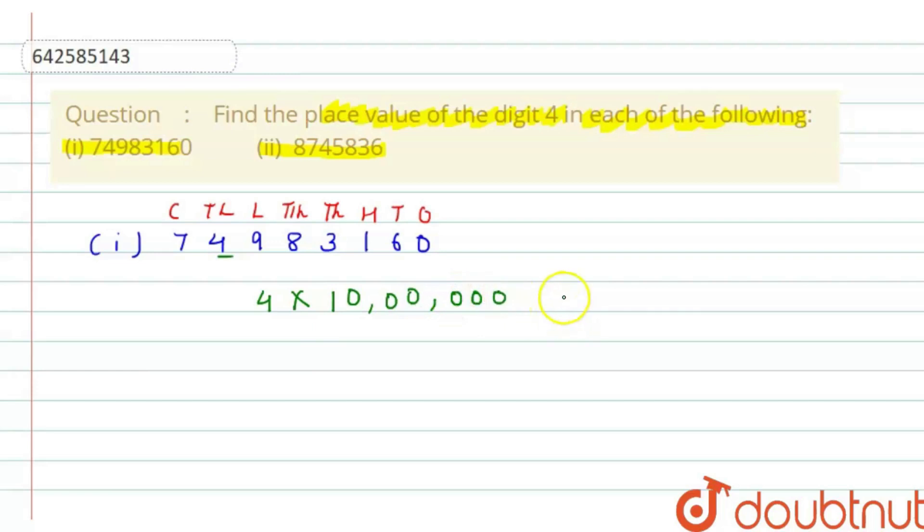Okay so it comes out to be 40 lakhs. So we can write that place value of 4 is 40 lakhs. I hope this part is clear.